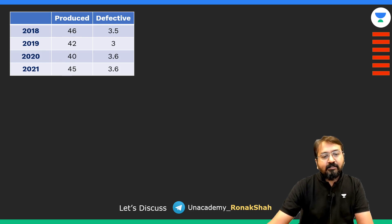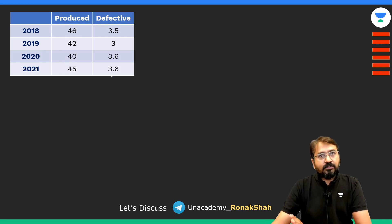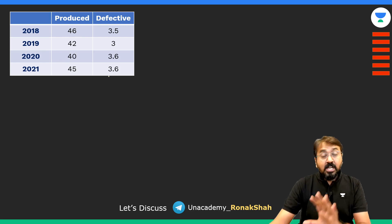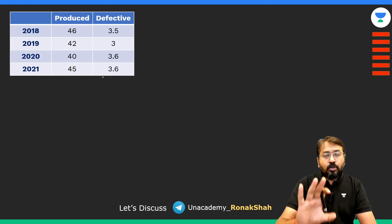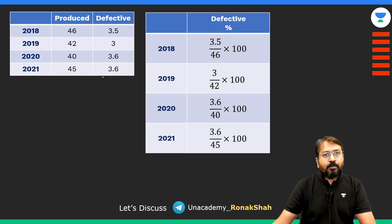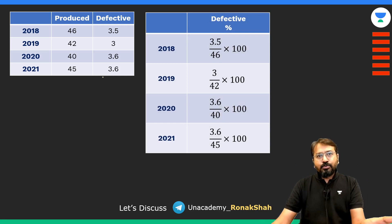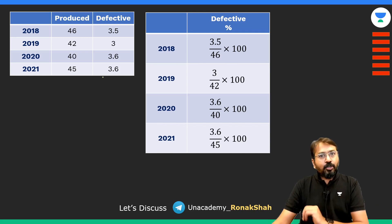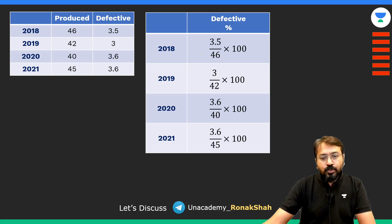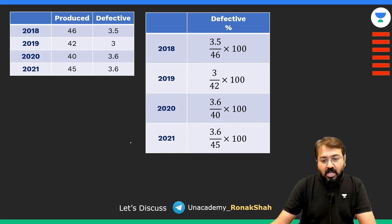Similarly, the defective laptops have been written in the thousands form. Now we need to compare these values. For the sake of understanding, I will write them in percentage form — though you really don't need to do all this once you've understood the technique, as you can just observe the values and eliminate options.